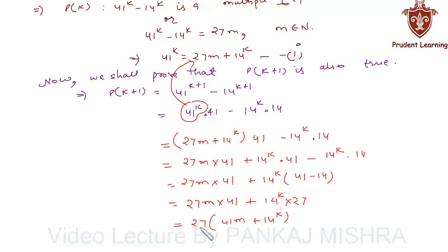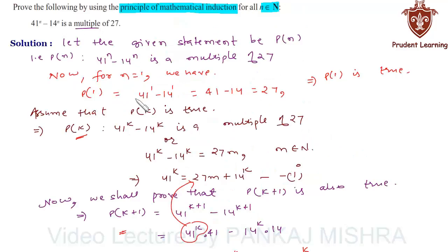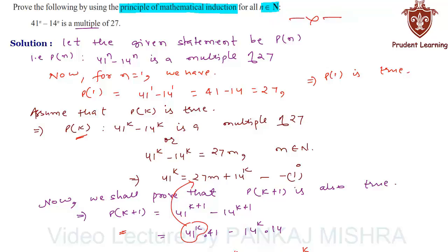Since this quantity is a multiple of 27, we can say that P(k+1) is true whenever P(k) is true. Hence, from the principle of mathematical induction, the statement P(n) is true for all natural numbers n. So this completes our solution.